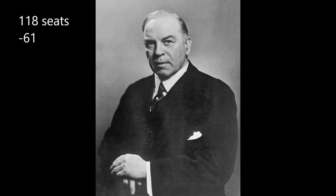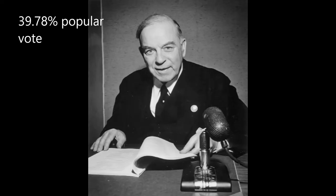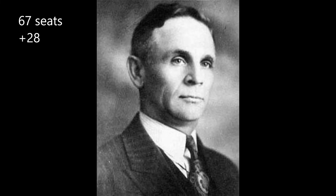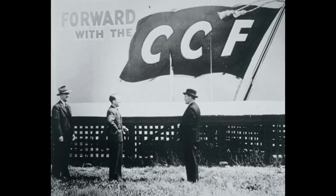Mackenzie King won, returning to Parliament as Prime Minister. He won 118 seats — 61 fewer than the previous election — giving him a minority government. However, 8 independent Liberals who were elected joined King, bumping his total to a majority government. He received 39.78% of the popular vote. The Progressive Conservative Party finished second with 67 seats, 28 more than the previous election, but Bracken struggled to form government as Canadians didn't want conscription. He received 27.62% of the popular vote.